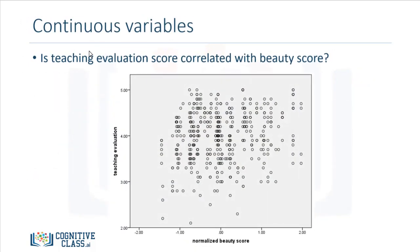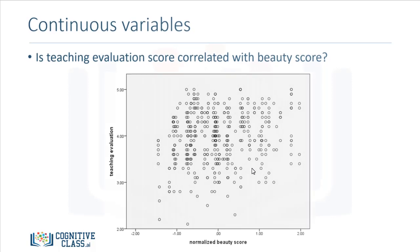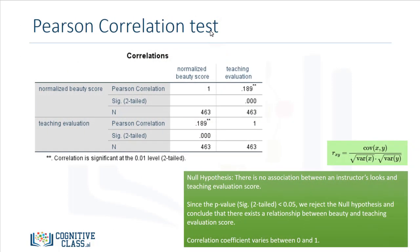Now let's work with the continuous variables — the teaching evaluation score and the beauty score. We have the normalized beauty score on the x-axis and the teaching evaluation score on the y-axis, and we can eyeball a positive upward-sloping relationship. It would be better if we have a test, so we run the Pearson correlation test between the two variables. The correlation is 0.189.